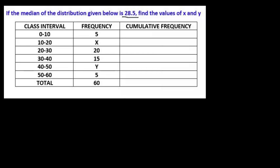To find the values of x and y, we have to find the cumulative frequency. The first cumulative frequency is 5. Next is 5 plus x. Then 20 plus 5 plus x, which is 25 plus x. And 15 plus 25 plus x gives us 40 plus x.